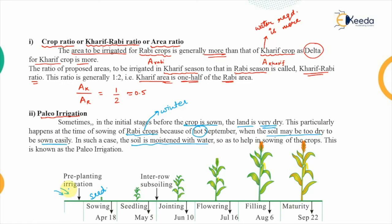For such cases, the soil is moistened with water. We pre-plan the irrigation facilities so that land preparation is carried out to moisten the land where sowing is to take place, helping in sowing of the crops. This amount of water provided before the planting of the crop is known as pre-planting irrigation, or in other terms, paleo irrigation.